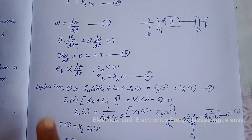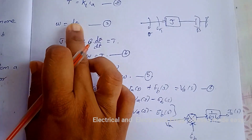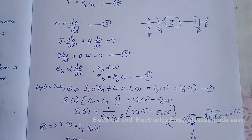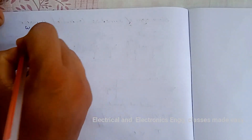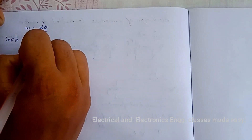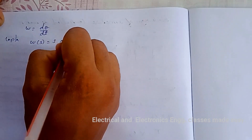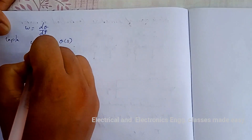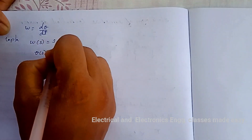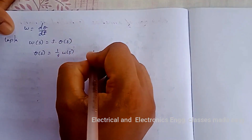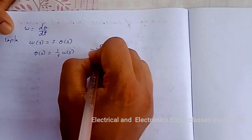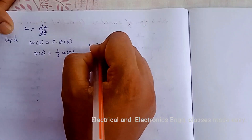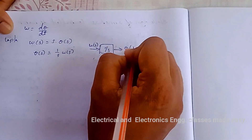Now consider the third equation: ω = dθ/dt. Taking the Laplace transform gives Ω(s) = s·Θ(s), so Θ(s) = (1/s)·Ω(s). The block diagram has 1/s as the transfer function, with input Ω(s) and output Θ(s), since our output is the angular displacement.